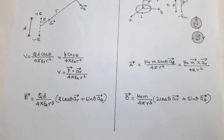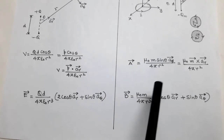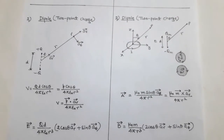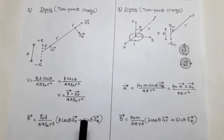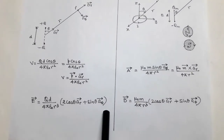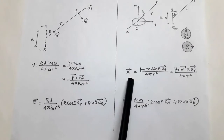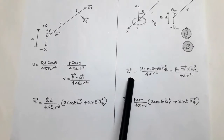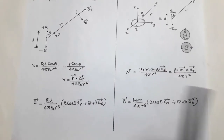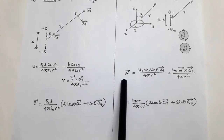This is a comparison between electric and magnetic monopoles and dipoles. In case of the electric dipole, we consider a scalar potential, and in case of the magnetic dipole, we consider a magnetic vector potential A vector, which arises due to the current density J vector.